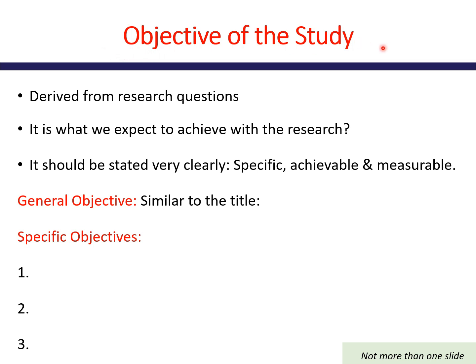After the research questions, the objectives of the study follow. The objective of the study is derived from the research question. The only difference is that the research question has the format of a question, whereas the objective has the format of a statement. The objective is what we expect to achieve with our research — it should be stated clearly, in a specific, achievable, and measurable way. We can divide it into a general objective and specific objectives.